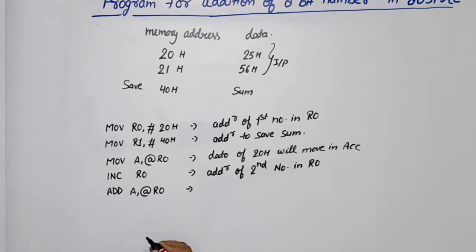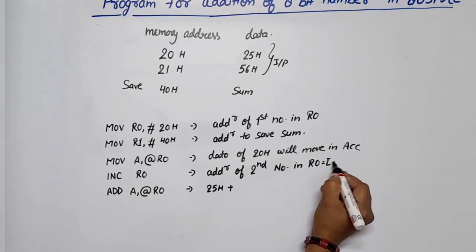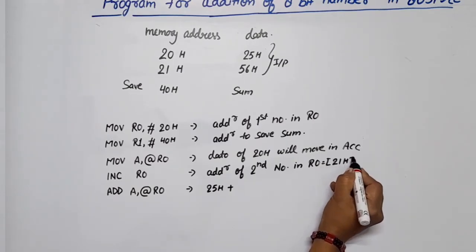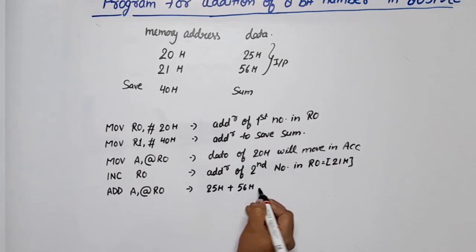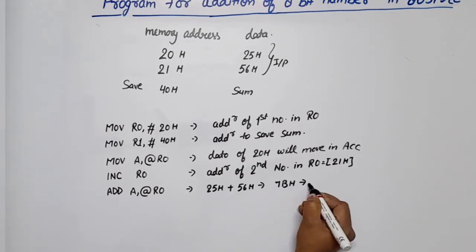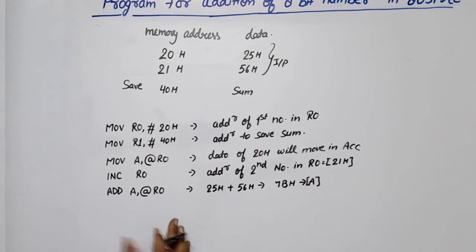Now we perform the addition: the accumulator contains 25H from address 20H, plus the latest value in R0, which is the data at 21H (56H). So 25H plus 56H equals 7BH. This is the new content of the accumulator.